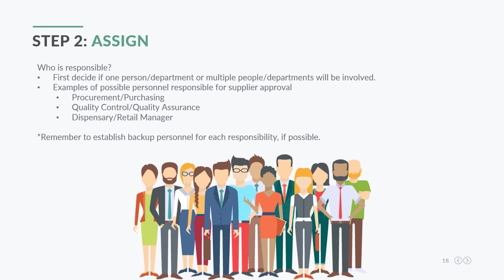Step two is to assign who is responsible. First, decide if one person, one department, or multiple people or departments will be involved. I recommend not having only one person responsible — at a minimum have a backup, or a whole department or team depending on your company size. Examples of possible personnel include procurement or purchasing departments, quality control and quality assurance, and your dispensary or retail manager. Always establish a backup.